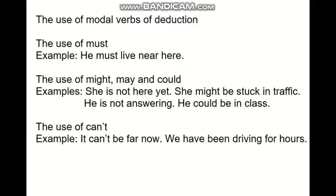Now I will explain the use of modal verbs of deduction. One modal verb of deduction is 'must'. We use must when we feel sure that something is true or is the only realistic possibility. For example: 'he must live near here' — this expresses a possibility.